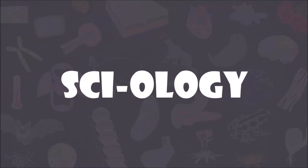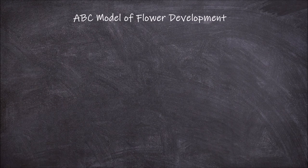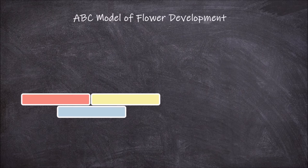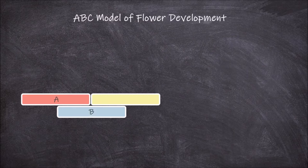Welcome back to my channel. In today's video we're going to go over the ABC model of flower development. The ABC model is a model of flower development based on the expression of three homeotic gene groups: group A, B, and C.